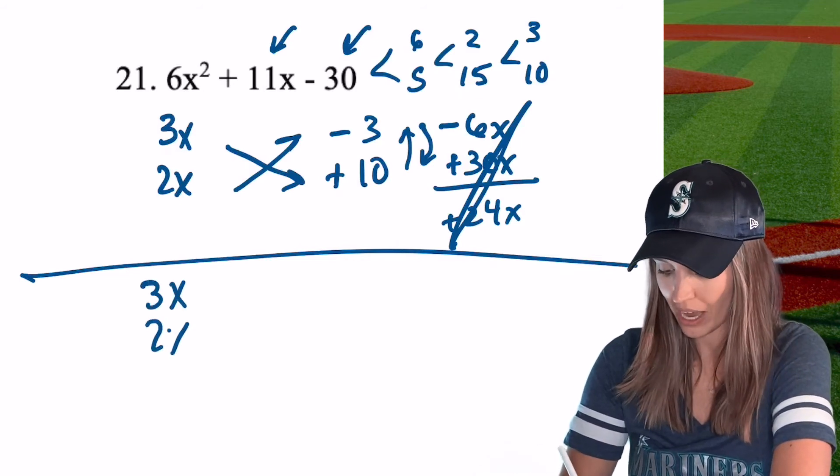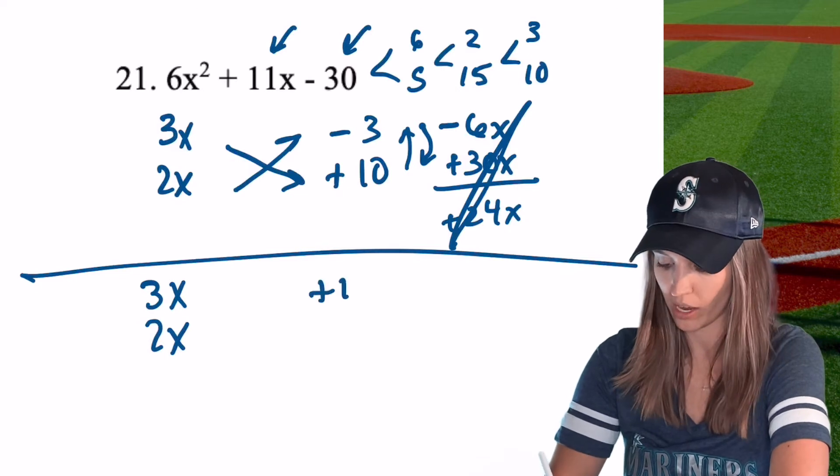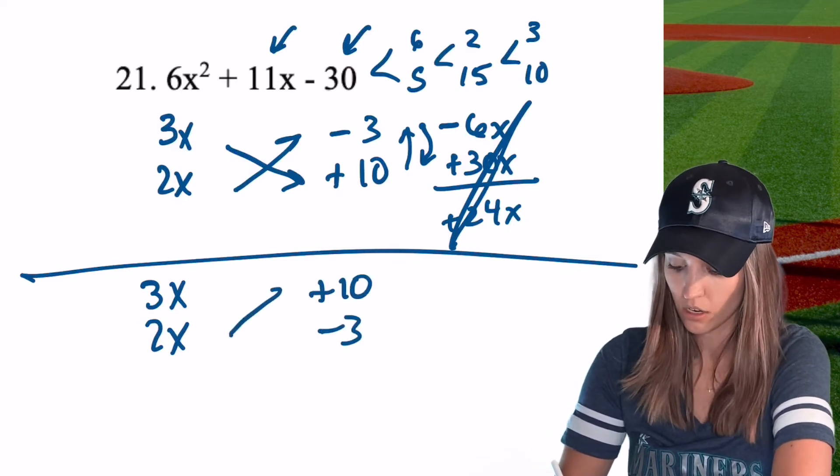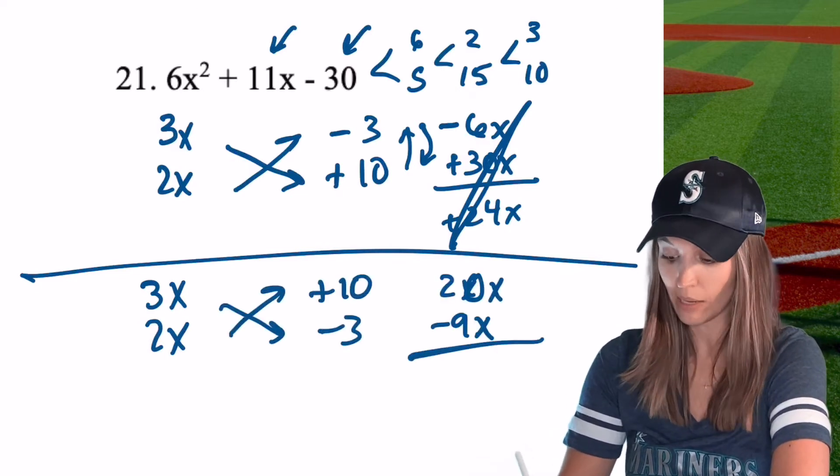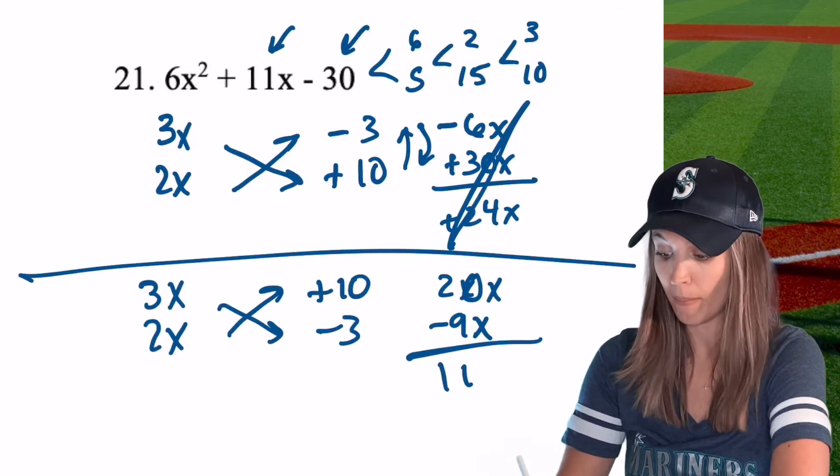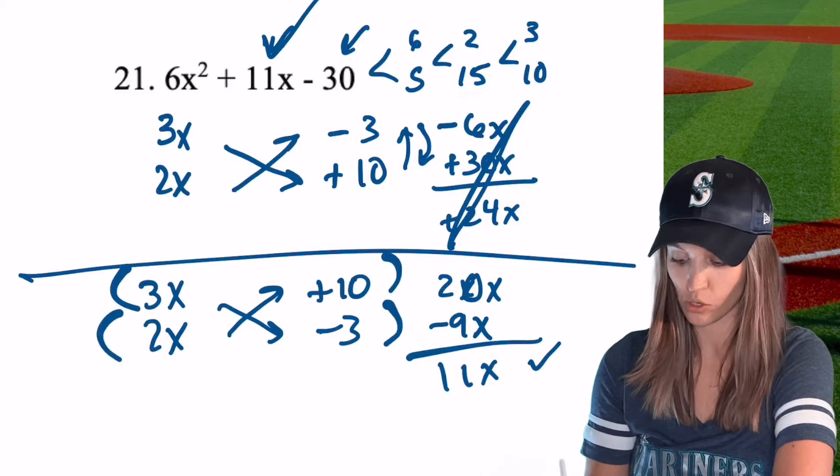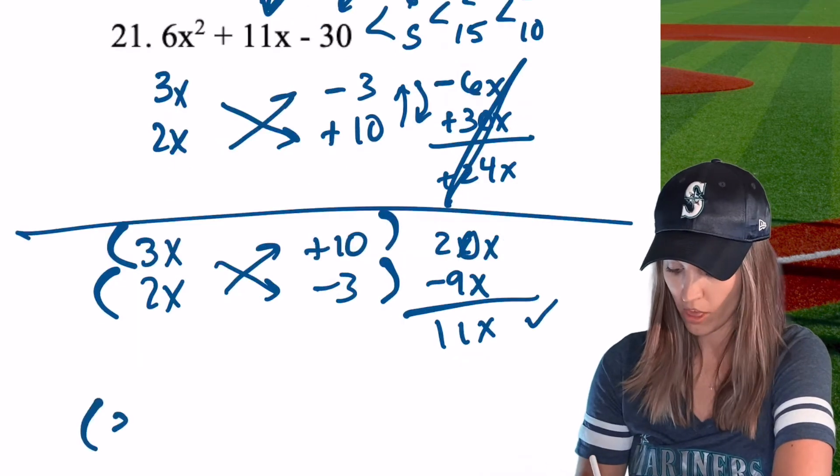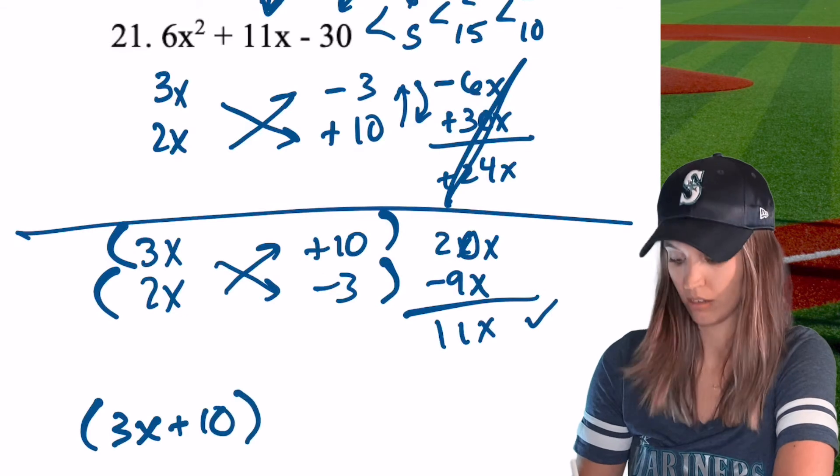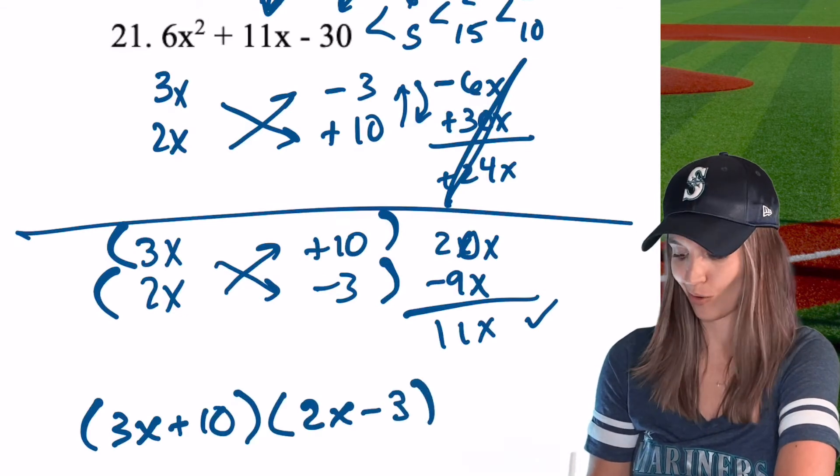So I'd get, okay, 3x, 2x, that's remaining the same. I'm switching, so I get positive 10, negative 3, crisscross. Awesome. 20 minus 9 is 11, positive 11x. So I'm getting that middle term that I wanted, so I just found my two factors. So we're going to make sure we write it in factored form, 3x plus 10, and then 2x minus 3. Awesome. How about you go try 22?